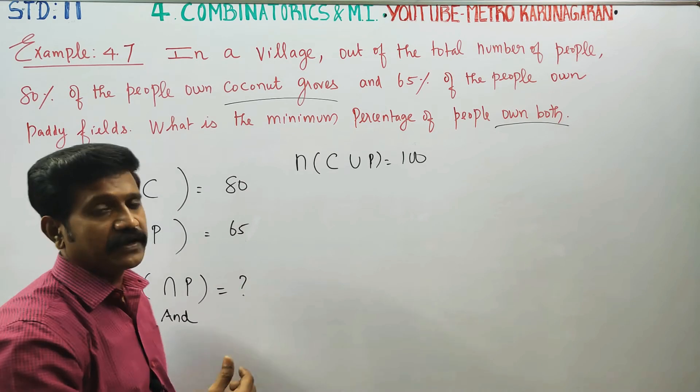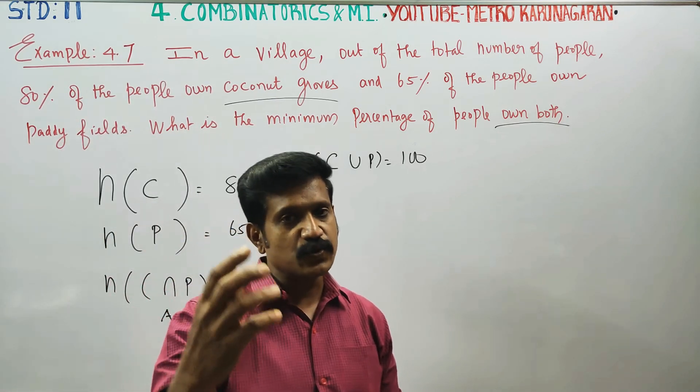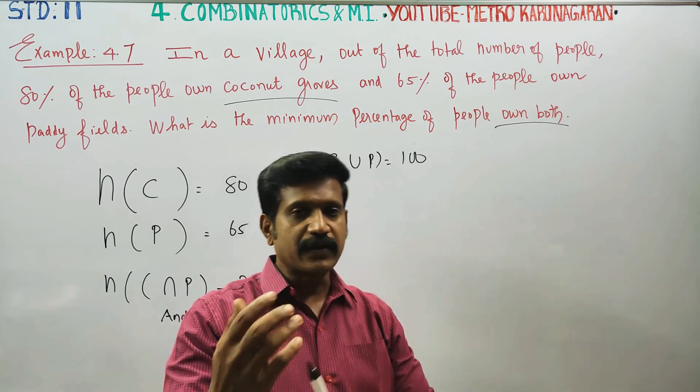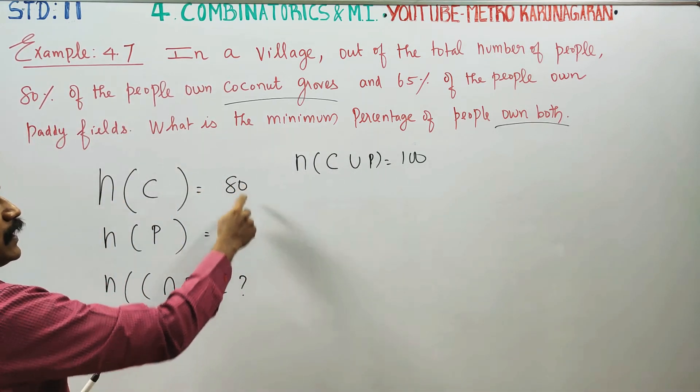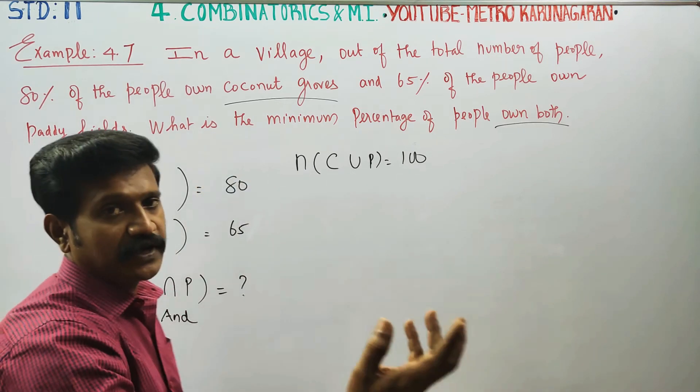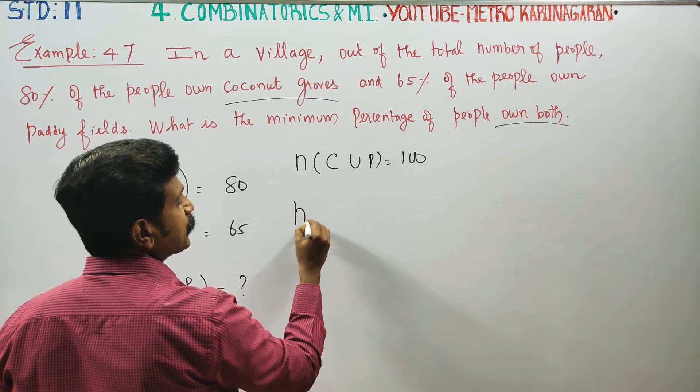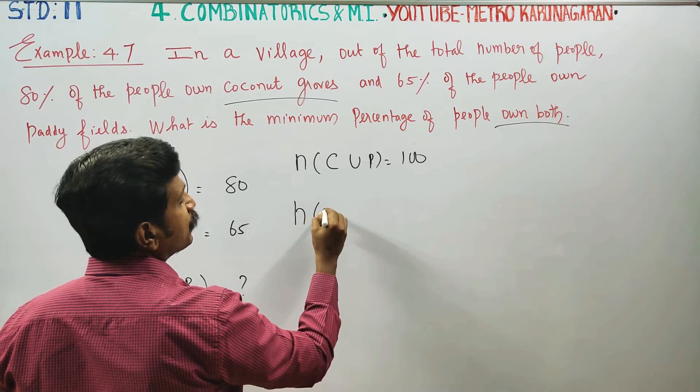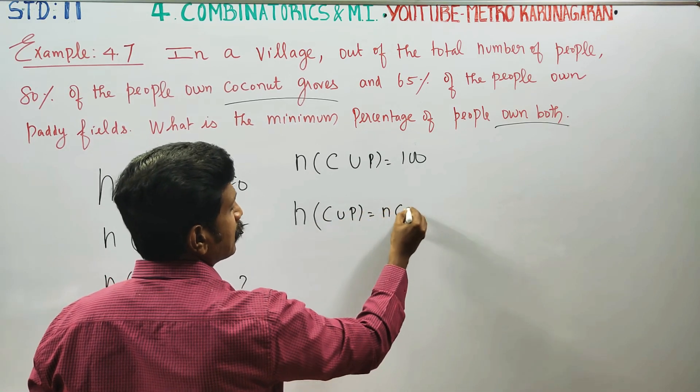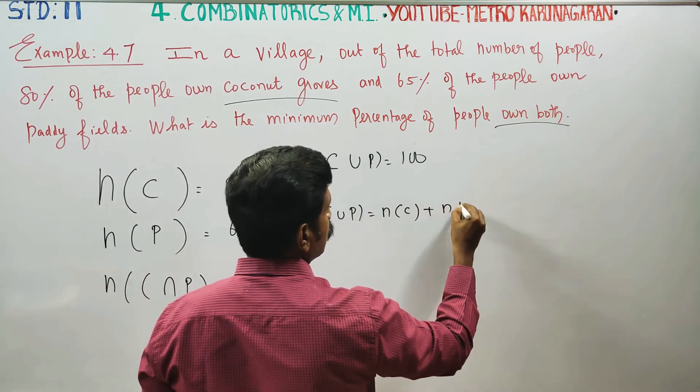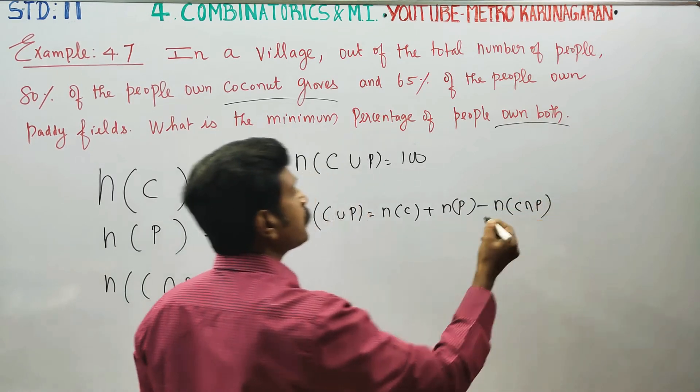This is the inclusion-exclusion principle. If you look at n(c union p), it is equal to n(c) plus n(p) minus n(c intersection p).